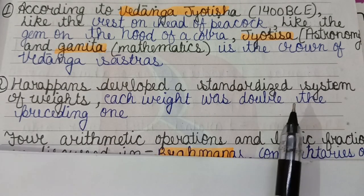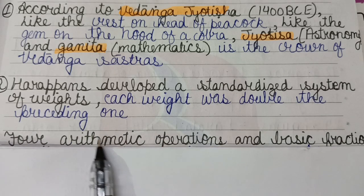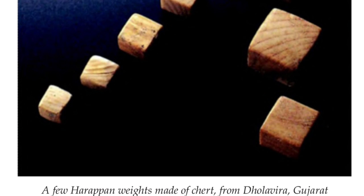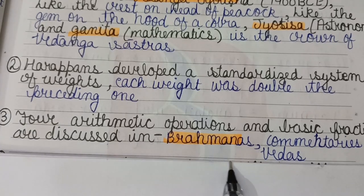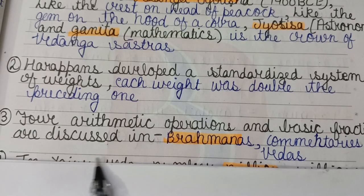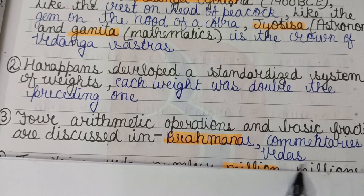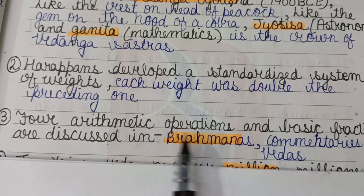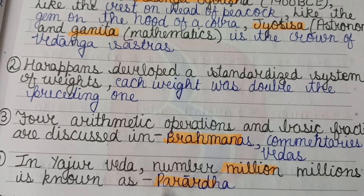The Harappans developed a standardized system of weights where each unit was double the preceding one. Four arithmetic operations and Vedic fractions are discussed in the Brahmanas, which are commentaries on the Vedas. In the Yajur Veda, the number 'million millions' is known as Pardha.